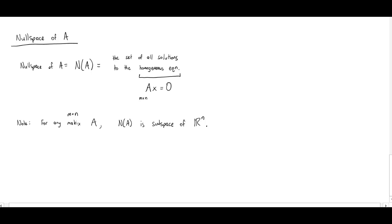Let's just understand why the null space is a subspace by checking the two closure properties. To have a subspace, your set has to be closed under addition and closed under scalar multiplication. For closure under addition, I want to take two vectors in the null space — I'll call them X₁ and X₂. To be closed under addition means that the sum should also be in the null space.